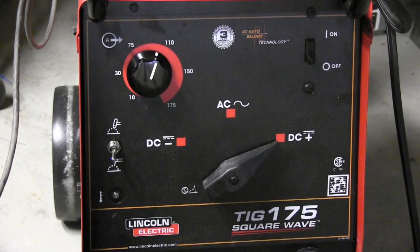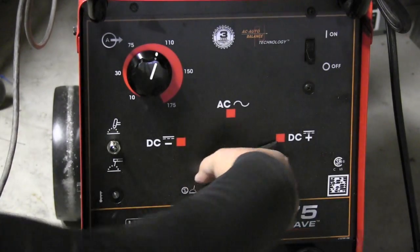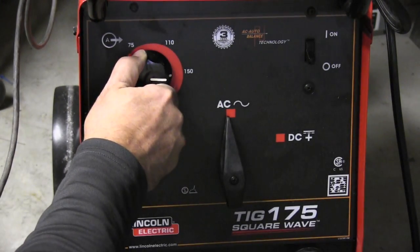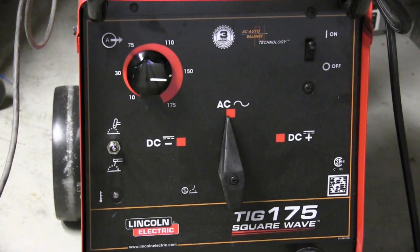Machines just don't get much more simple than this. It's got a preset post flow timer and it's got an auto AC balance, which means it automatically adjusts AC balance as you're welding according to the level of oxidation of the metal.